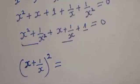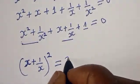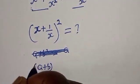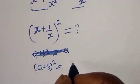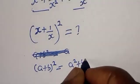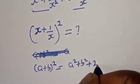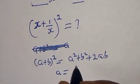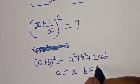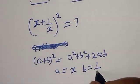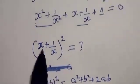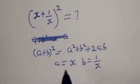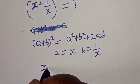Now take note that x plus 1 over x, the whole square, is equal to a squared plus b squared plus 2ab, where a is equal to x and b is equal to 1 over x.